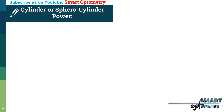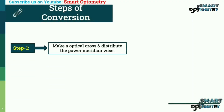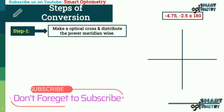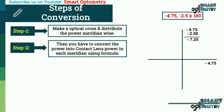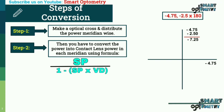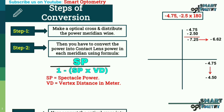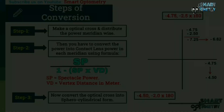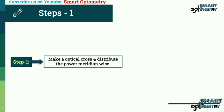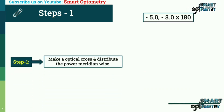So the estimated contact lens power for -5D spectacle power is -4.75D. Now let's see how to convert cylindrical and sphero-cylindrical spectacle power into contact lens power. The steps are: Step 1 — make an optical cross and distribute the power meridian-wise; Step 2 — convert spectacle power into contact lens power in each meridian using the formula SP divided by (1 minus SP multiplied by VD); Step 3 — convert the optical cross into sphero-cylindrical form to get the final contact lens power.